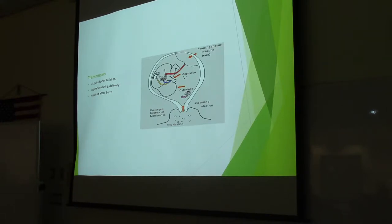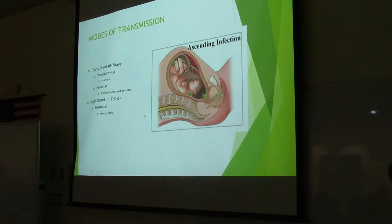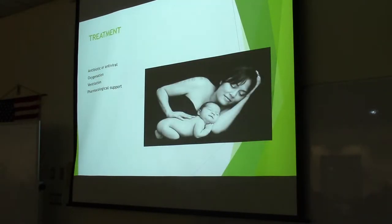Acquiring infection after birth would be through somebody's hands infecting the newborn. The infection will present at birth and within a week if it came during labor and delivery or was acquired in utero. But after seven days, it's not going to be caused by something in utero or during delivery — that's going to be acquired from the environment. Treatments would be antibiotics or antivirals, and ventilation if there's respiratory distress.